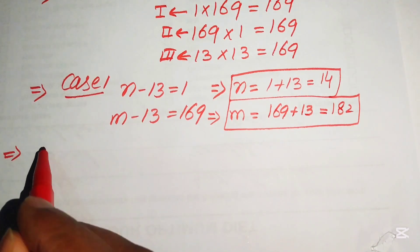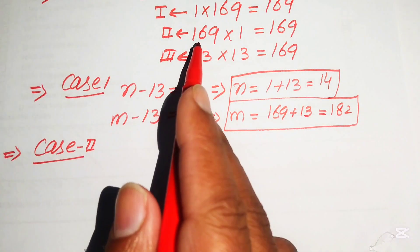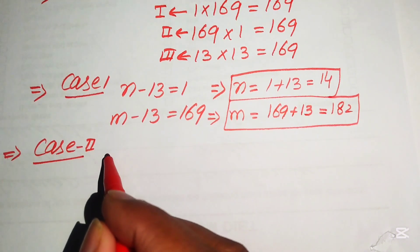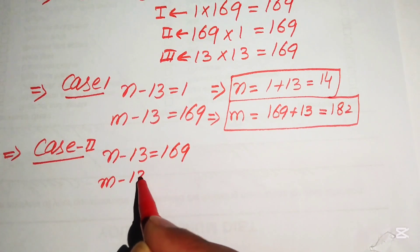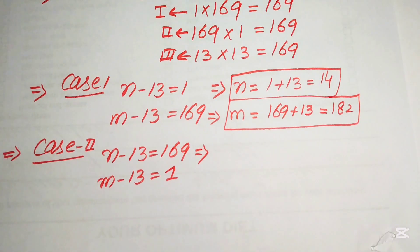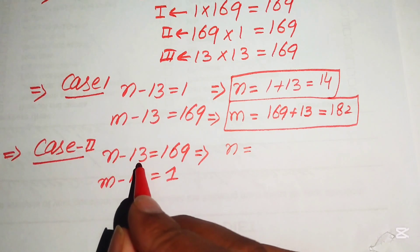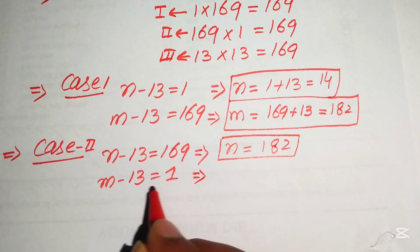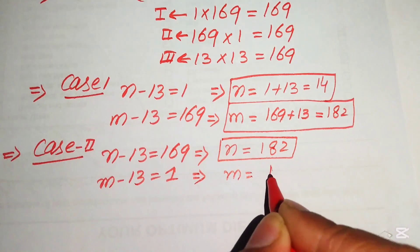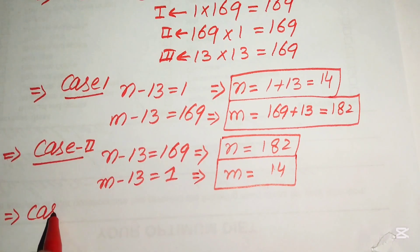Case 2: n minus 13 equals 169 and m minus 13 equals 1. So n equals 169 plus 13 equals 182, and m equals 14.